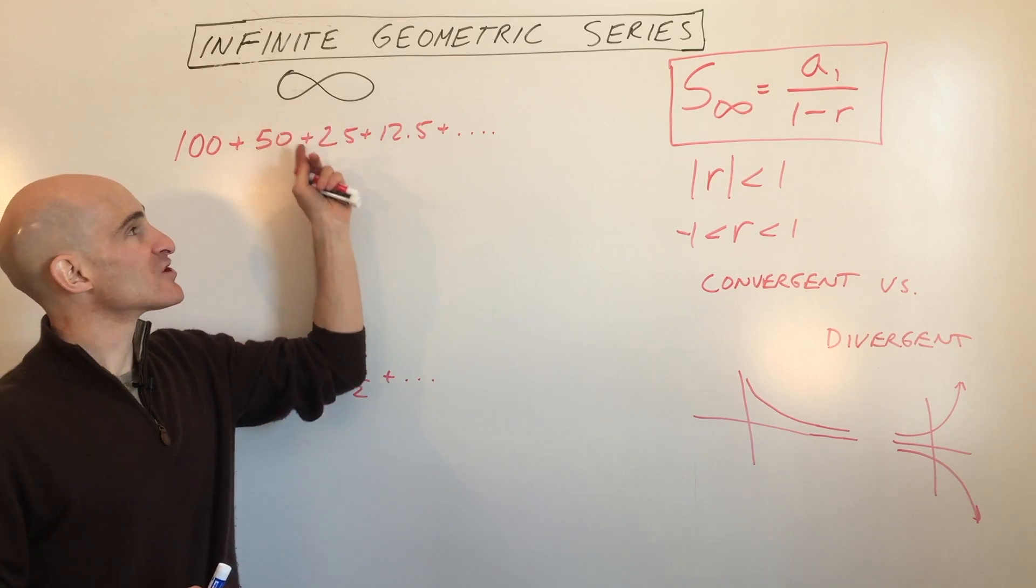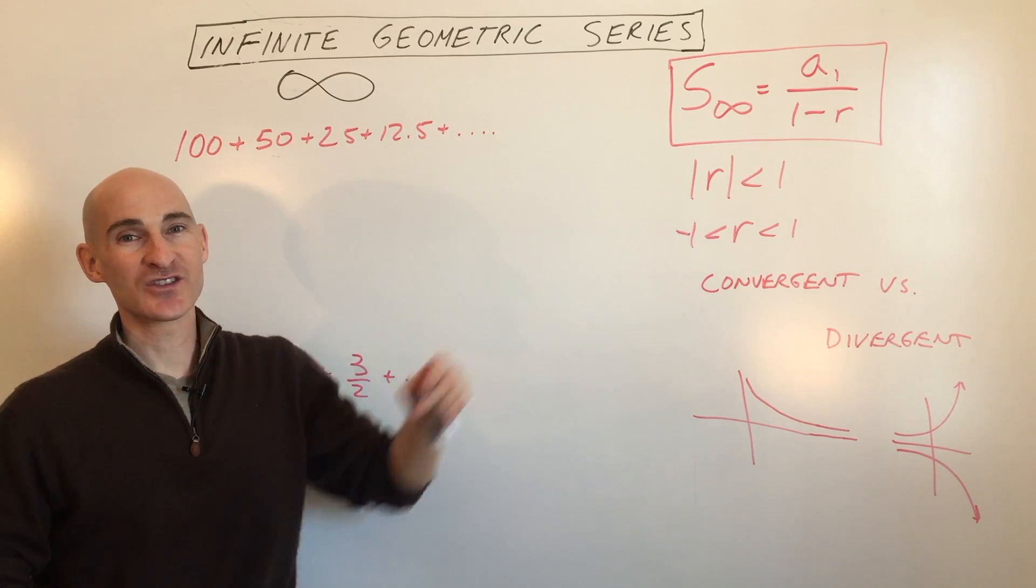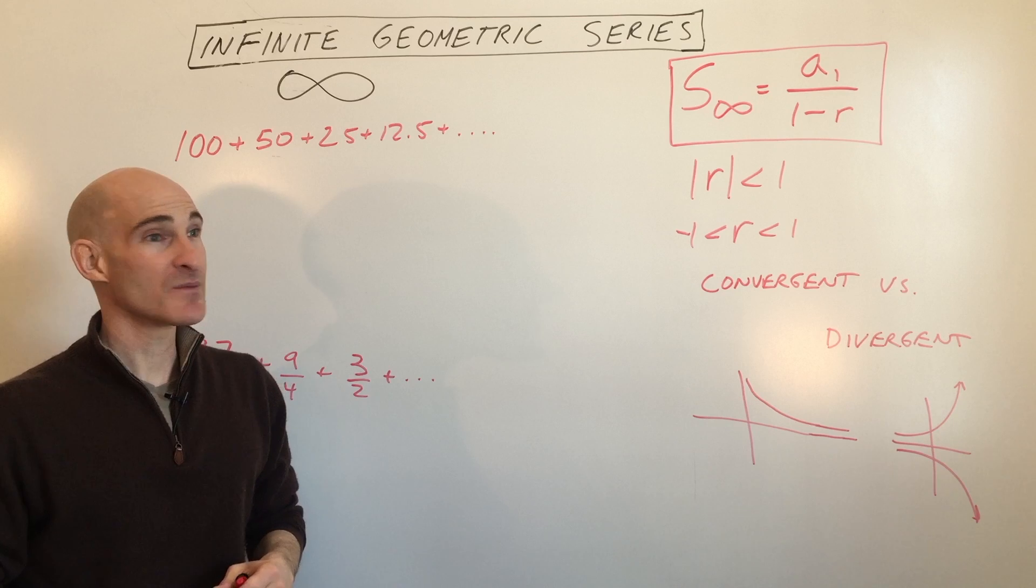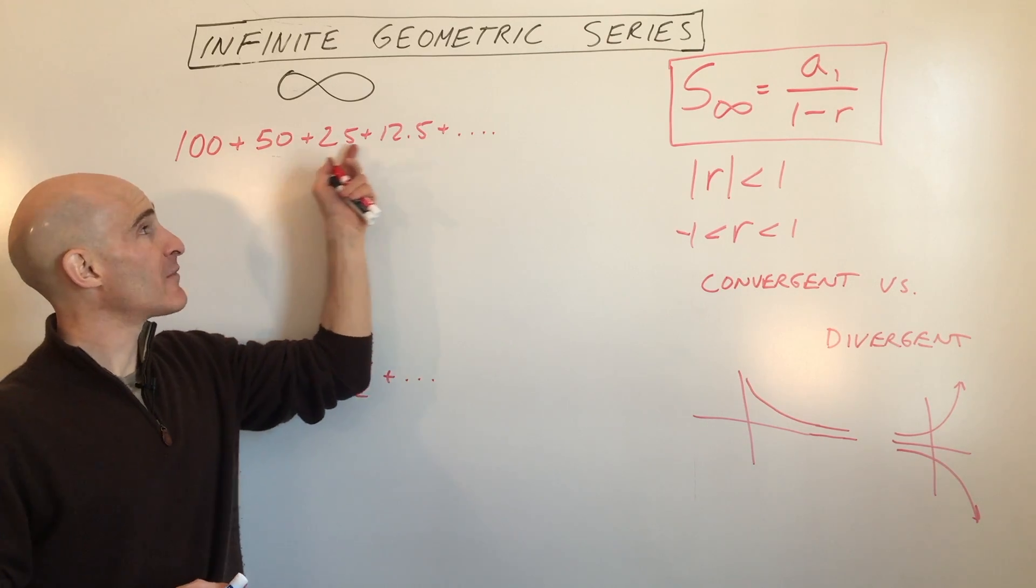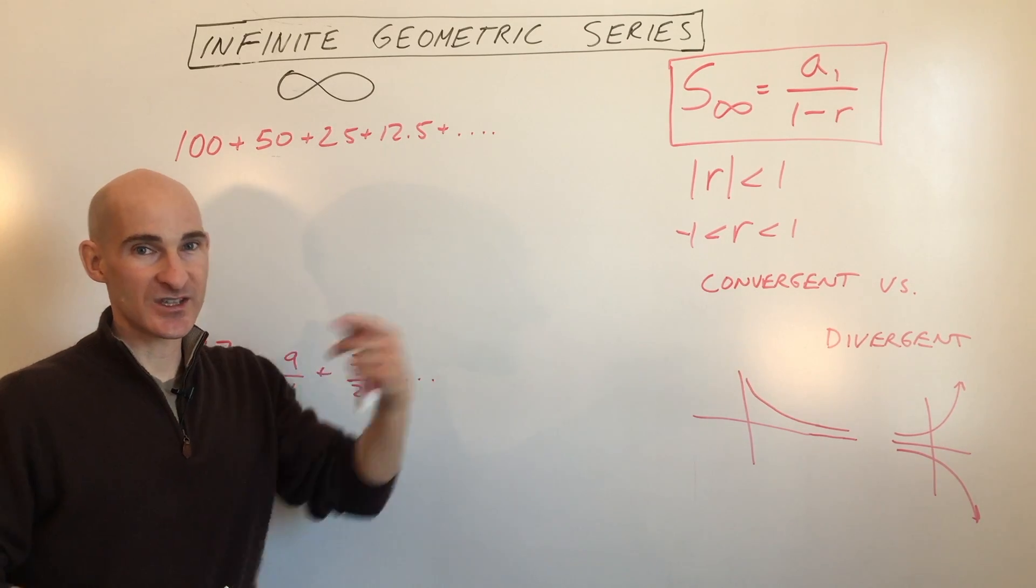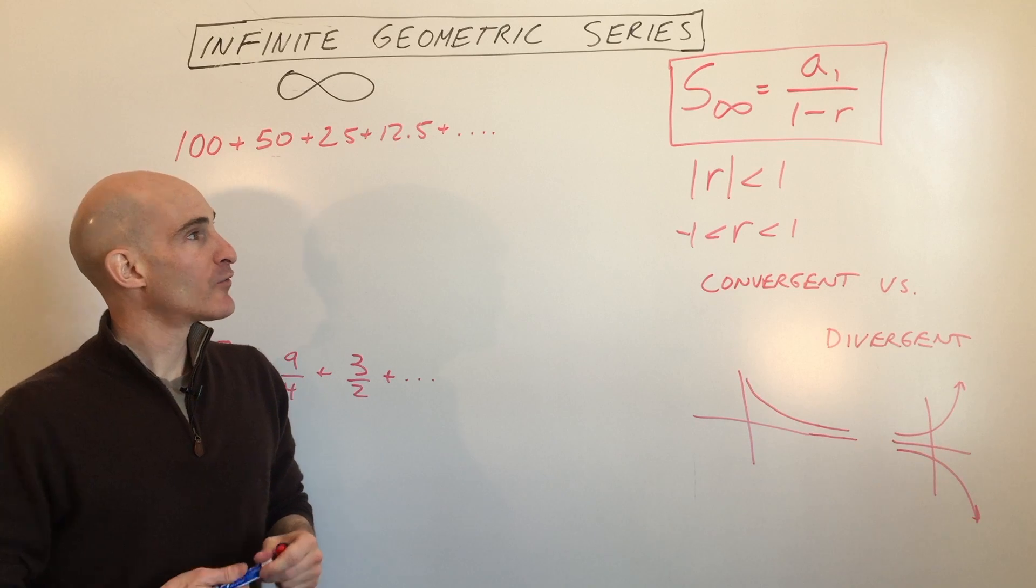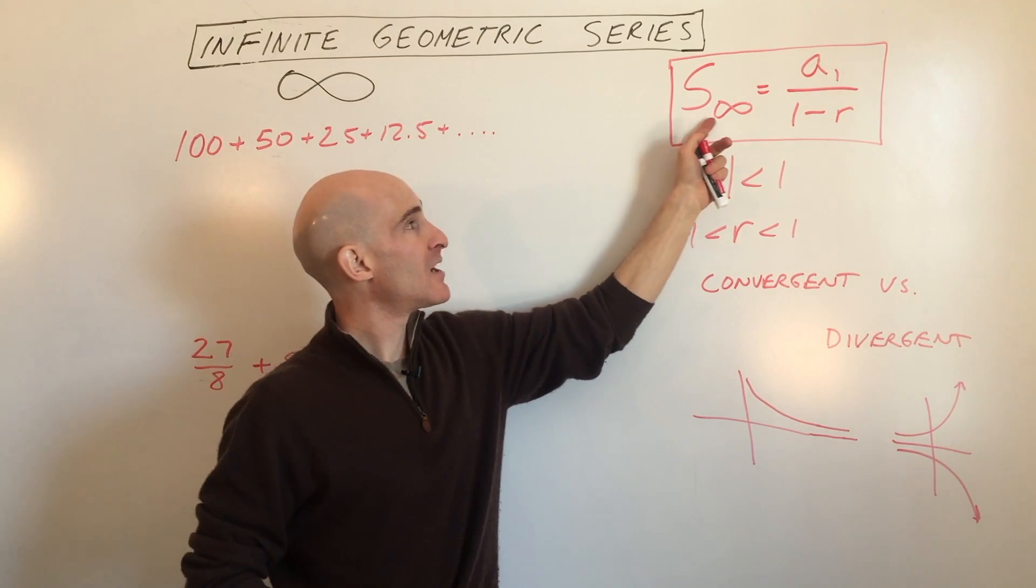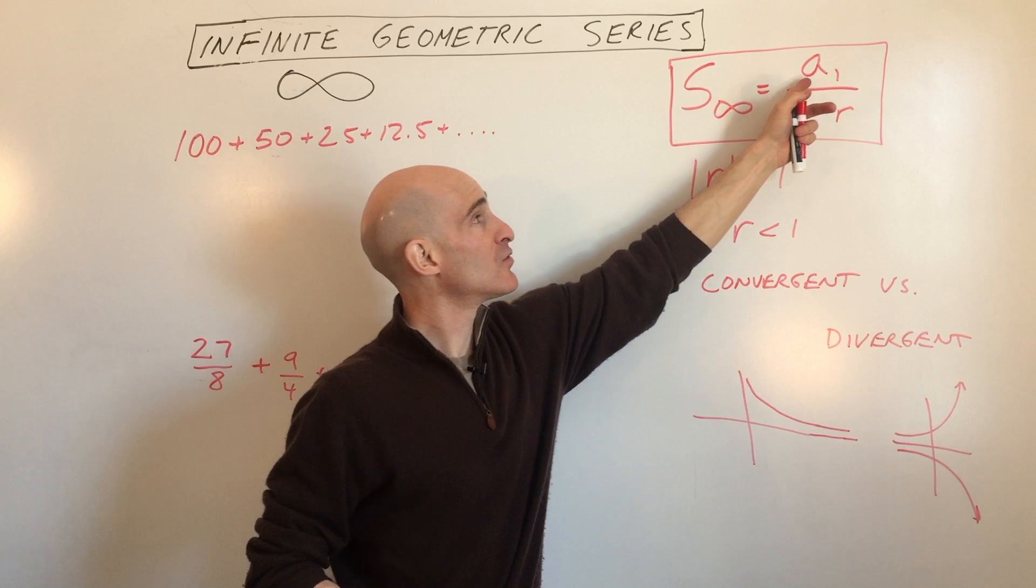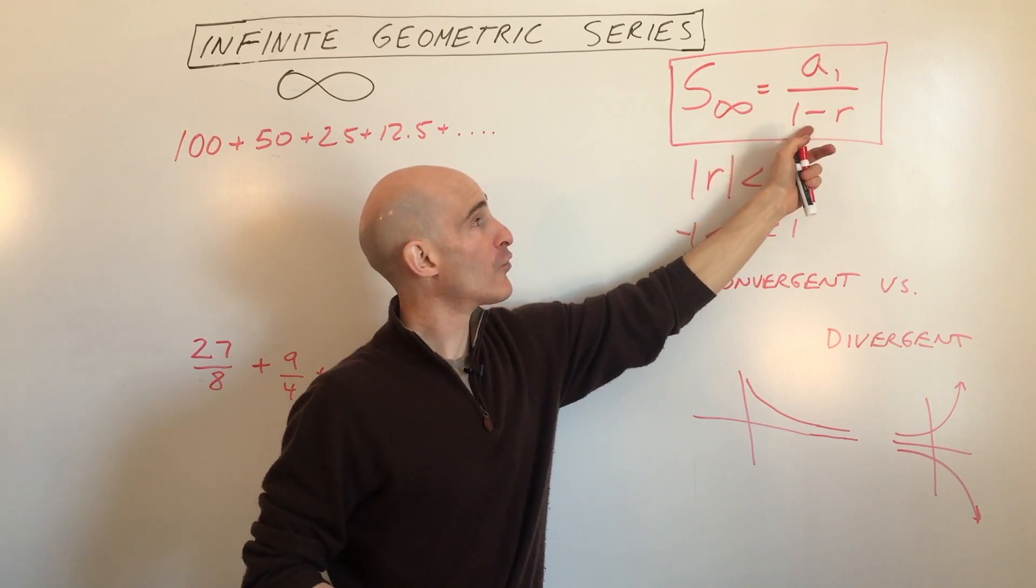In this video, we're going to talk about where it just keeps on going and going and going. So you want to find the sum of all those terms, and it's geometric. You're multiplying by the same ratio to get to the next term. And so the form that we're going to be using is this one over here. The sum of an infinite geometric series equals a sub 1 over 1 minus r.